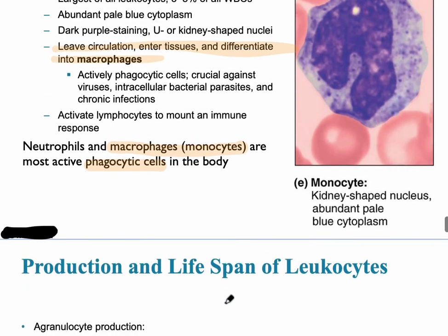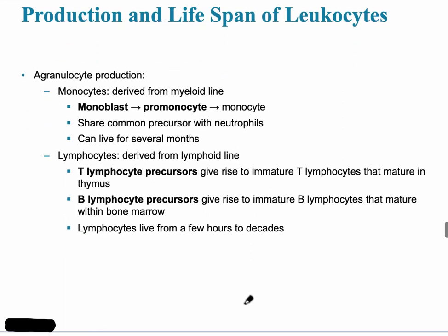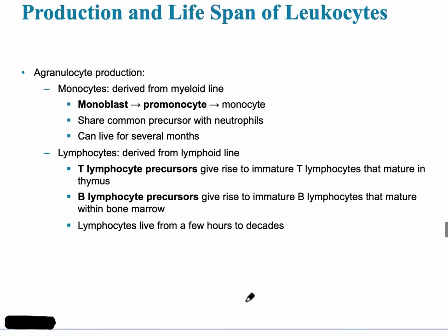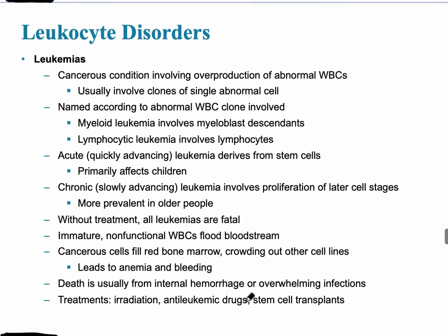The next slides refer to the lineage or development of leukocytes, which is especially important for cancers of white blood cells, called leukemias. Different types of leukemias include myeloid leukemia, named because it involves descendants of the myeloblast, and lymphocytic leukemias, which involve lymphocytes. They are also named based on whether they're a quickly or slowly advancing type — for example, acute myelocytic leukemia (AML) or acute lymphocytic leukemia (ALL).